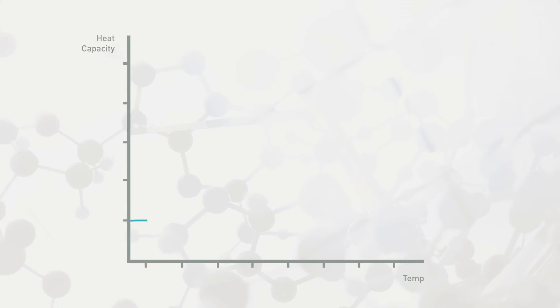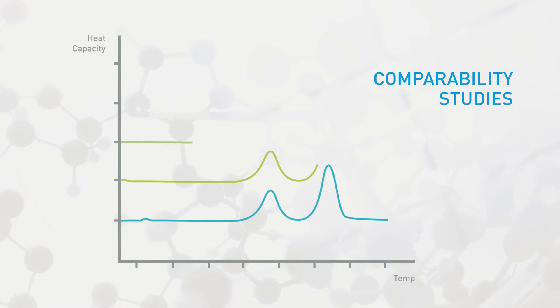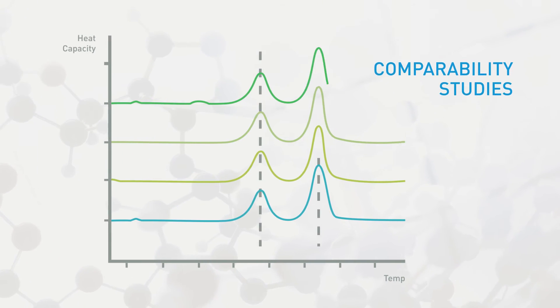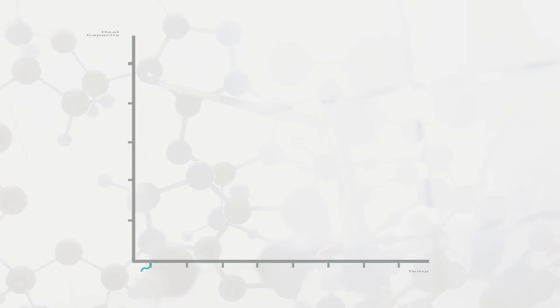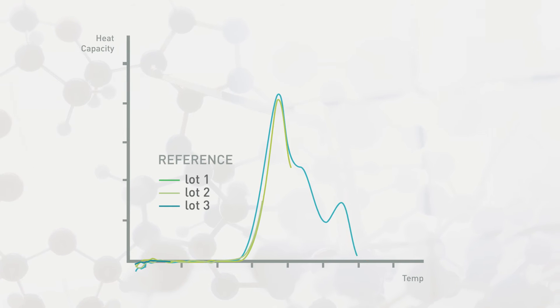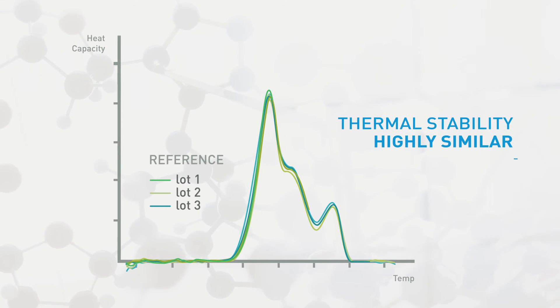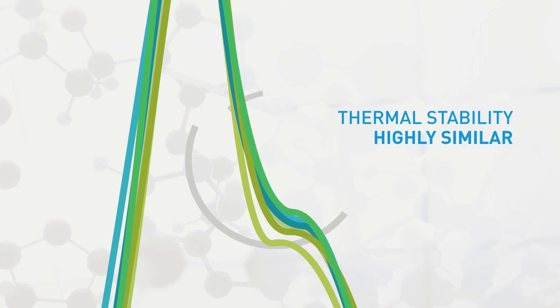DSC is typically used in comparability studies, comparing the TM and other DSC parameters for different lots of proteins. When DSC profiles are identical within experimental variability, the thermal stability of the samples are highly similar.